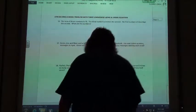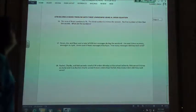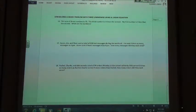Solving a word problem with three unknowns using a linear equation. It says the sum of three numbers is 75. The third number is three times the second. The first number is five less than the second. What are the numbers?